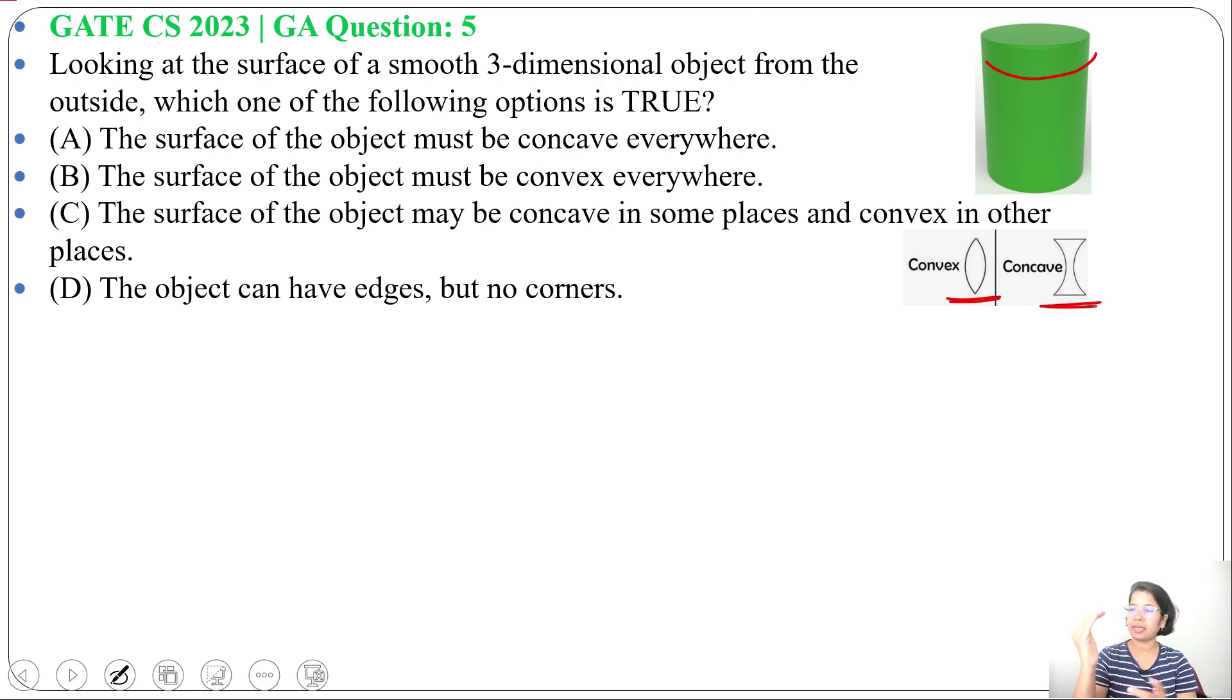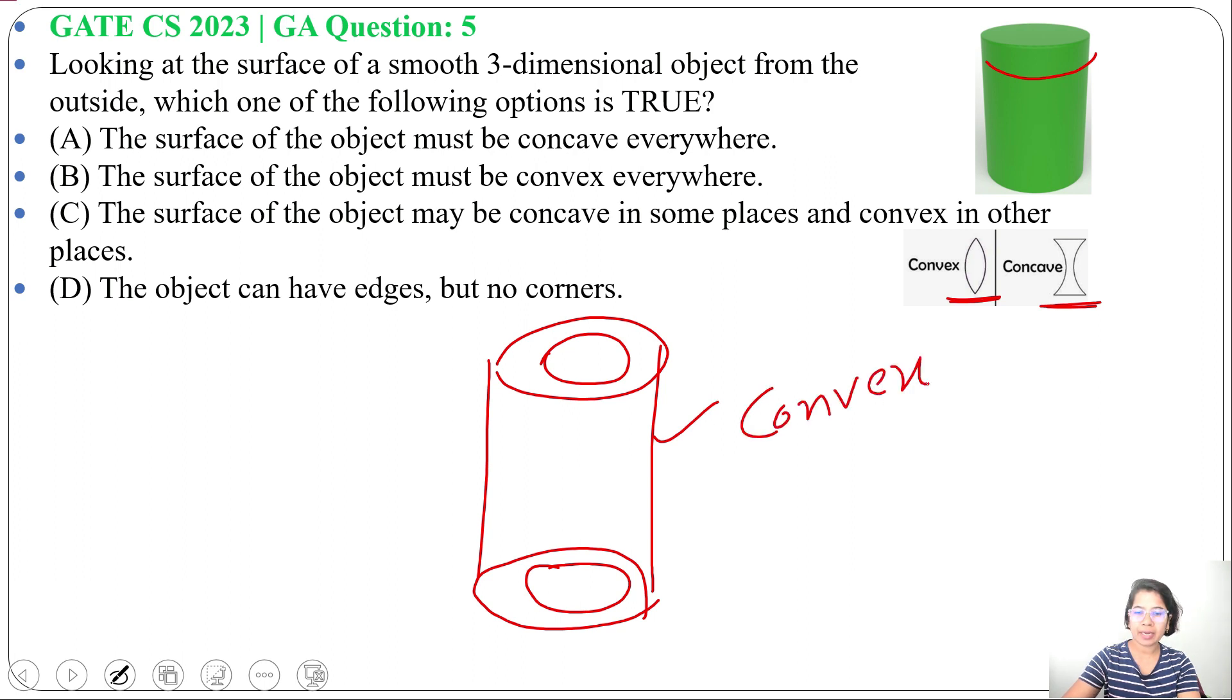Suppose a hand is like this, then this outside is convex while this inside is concave. Now suppose we have a cylinder like this, a hollow cylinder. Then from outside it is convex and from inside it is concave.